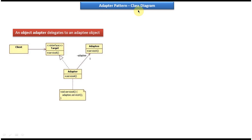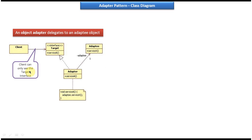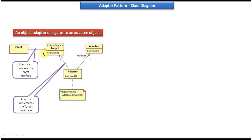We can implement adapter design pattern in two ways. The first way is object adapter. Here you can see a client class, a target interface, an adapter class, and an adaptee class. The client can only see the target interface. This adapter class implements the target interface and provides implementation of the service method.